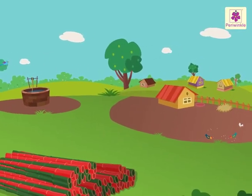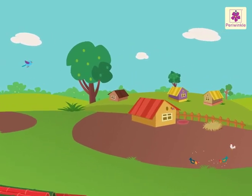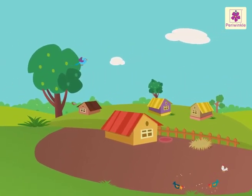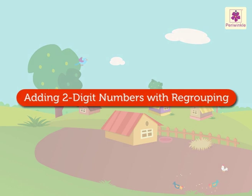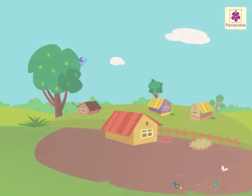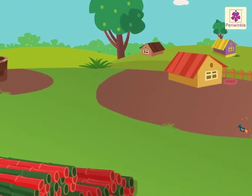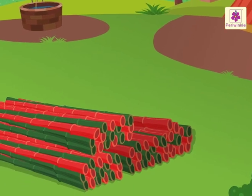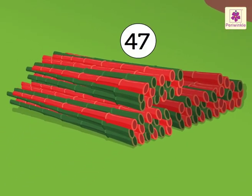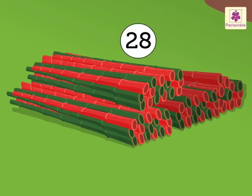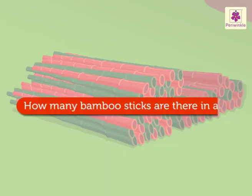Hey! Look! A village! Come, let us learn adding two-digit numbers with regrouping in this village. Can you see those colourful bamboo sticks? There are forty-seven red bamboo sticks and twenty-eight green bamboo sticks. Let's see how many bamboo sticks there are in all.